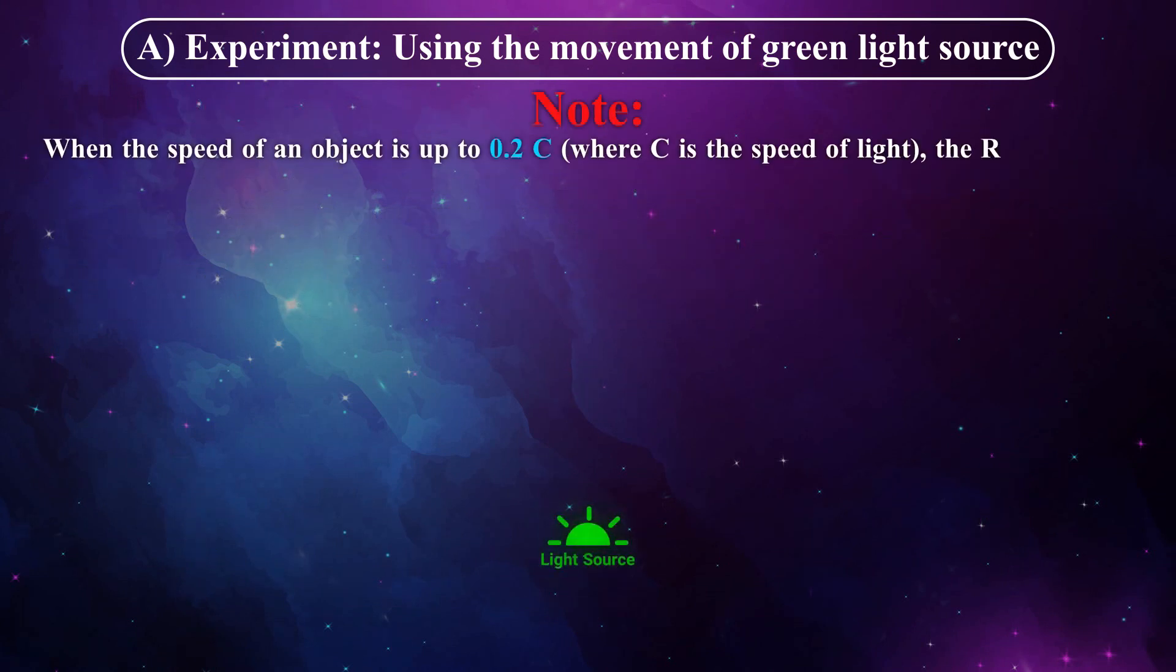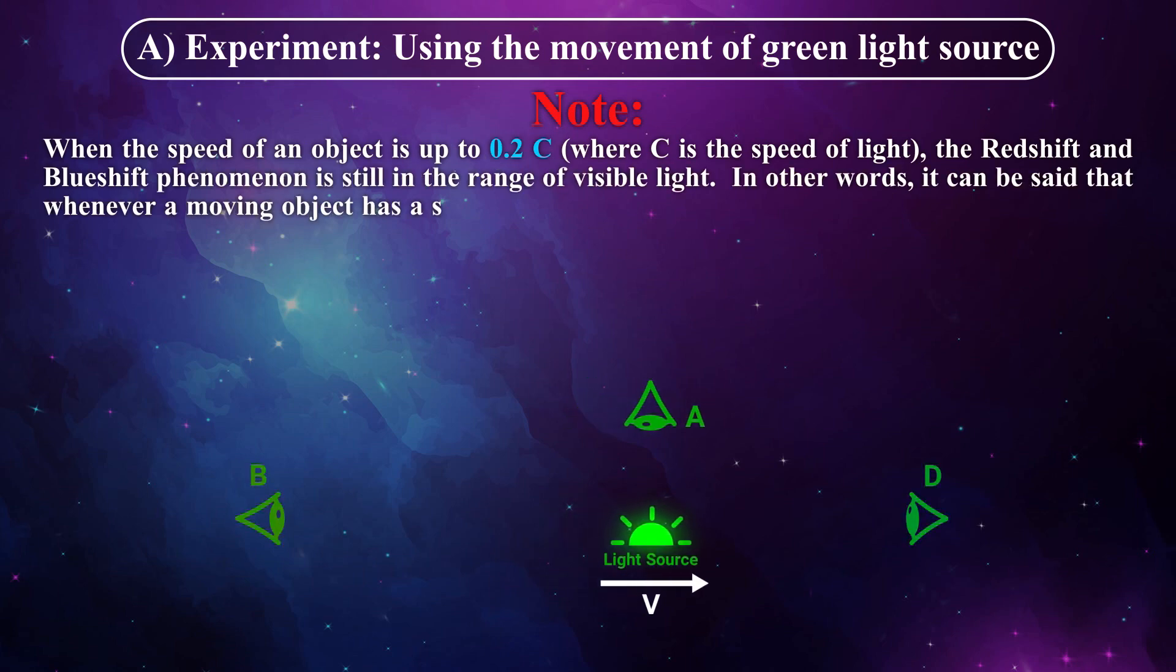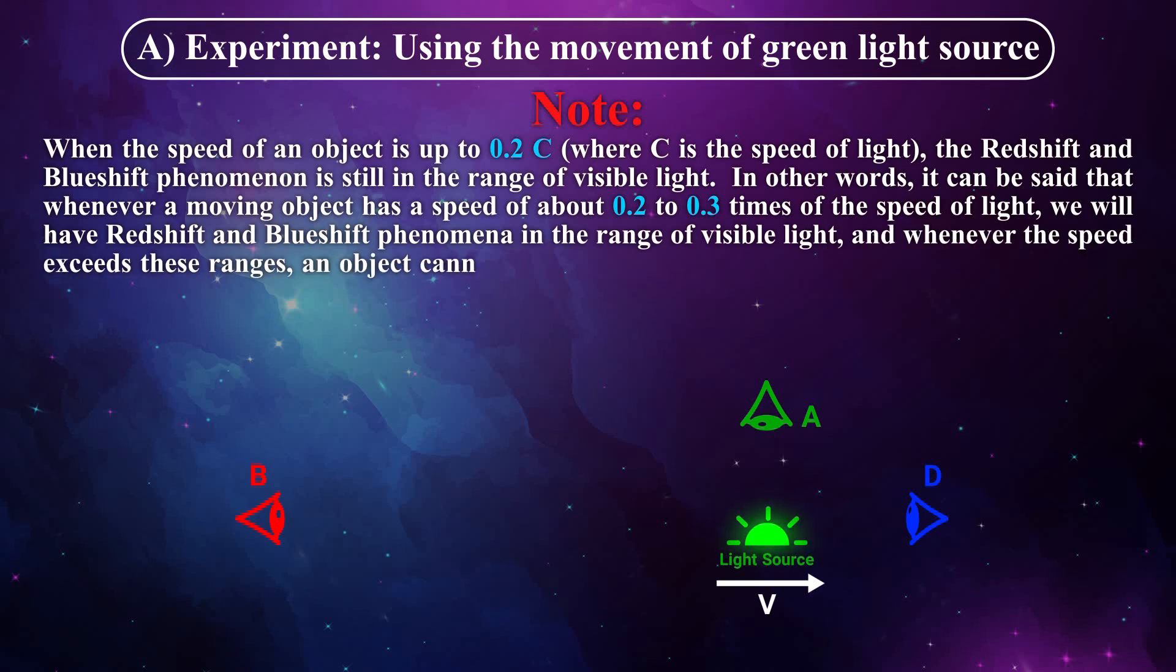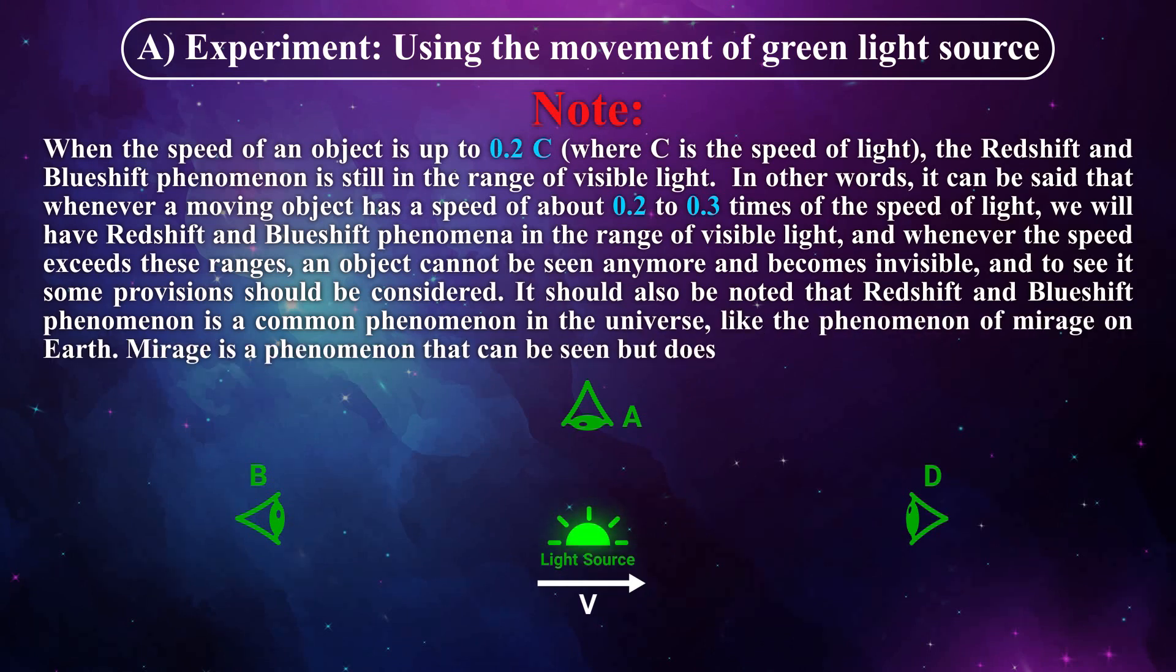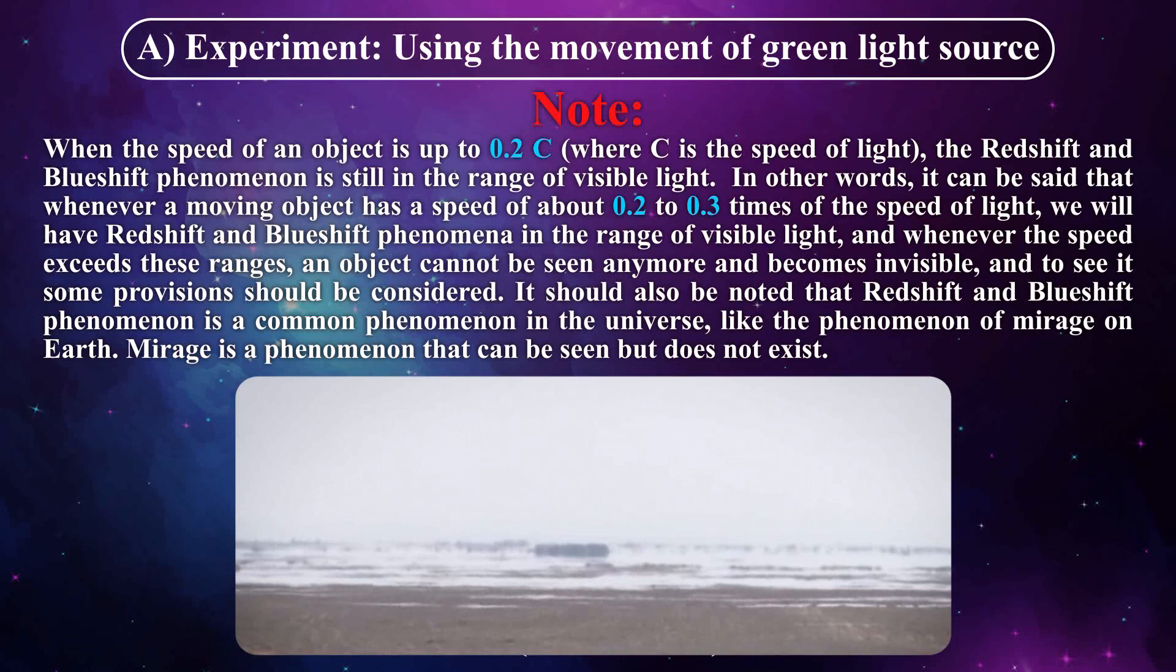Note: when the speed of an object is up to 0.2c, where c is the speed of light, the redshift and blueshift phenomenon is still in the range of visible light. In other words, it can be said that whenever a moving object has a speed of about 0.2 to 0.3 times of the speed of light, we will have redshift and blueshift phenomena in the range of visible light. And whenever the speed exceeds these ranges, an object cannot be seen anymore and becomes invisible. And to see it, some provisions should be considered. It should also be noted that redshift and blueshift phenomenon is a common phenomenon in the universe, like the phenomenon of mirage on Earth. Mirage is a phenomenon that can be seen but doesn't exist.